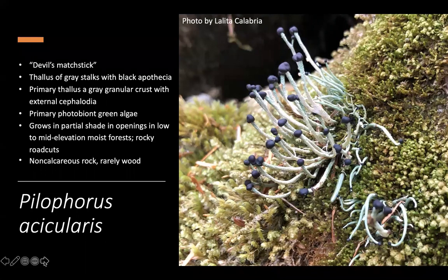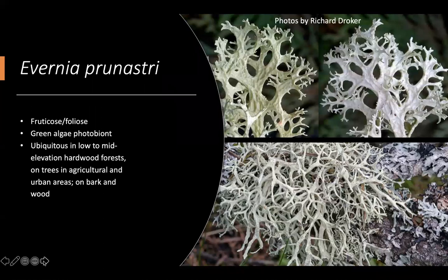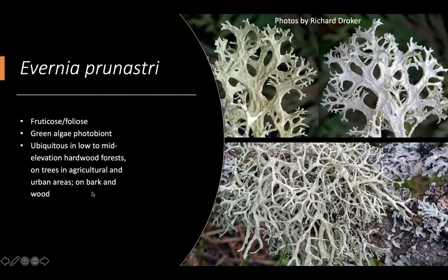It prefers non-calcareous rock and sometimes wood — this is devil's matchstick. Next is Evernia prunastri, a very ubiquitous lichen that grows in hardwood forests at low to middle elevations on trees in agricultural and urban areas. This is a great example of why I call it fruticose-foliose: technically it's fruticose and can shrub out into a three-dimensional shape, but an individual thallus clearly has a top and bottom, with a distinctly green top and white bottom, and a beautiful dichotomous branching pattern. It has a green algae photobiont.